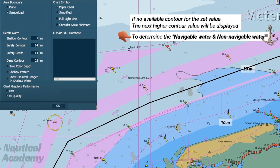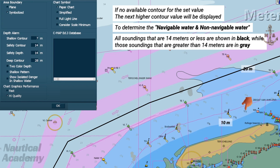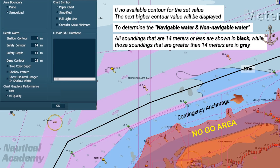To determine the navigable and non-navigable waters, check the set safety depth — in this case 14 meters. All soundings that are 14 meters or less are shown in black, while those greater than 14 meters are in gray. We can mark those areas where the soundings are in black as the no-go area, while the light shaded area where the soundings are in gray represents navigable waters. These navigable waters within the light blue areas where the soundings are greater than the safety depth can also serve as a contingency anchorage in case the vessel needs to drop anchor during an emergency situation.